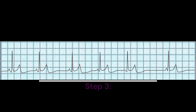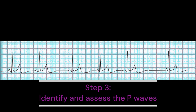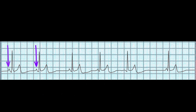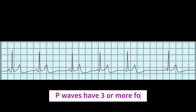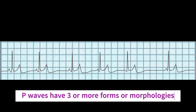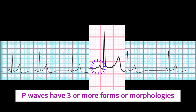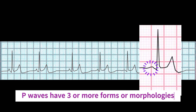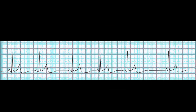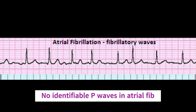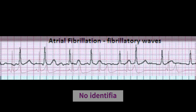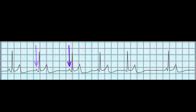Step 3: Identify the P-waves. Look for P-waves that are not uniform in shape, size, or duration. In multifocal atrial rhythm, there should be at least 3 different morphologies or forms of the P-wave. It is important that you are able to discern the P-waves. If the P-waves are not identifiable, it is not multifocal atrial rhythm and could be atrial fibrillation instead. There should still be one P-wave in front of every QRS, despite having varying morphologies.